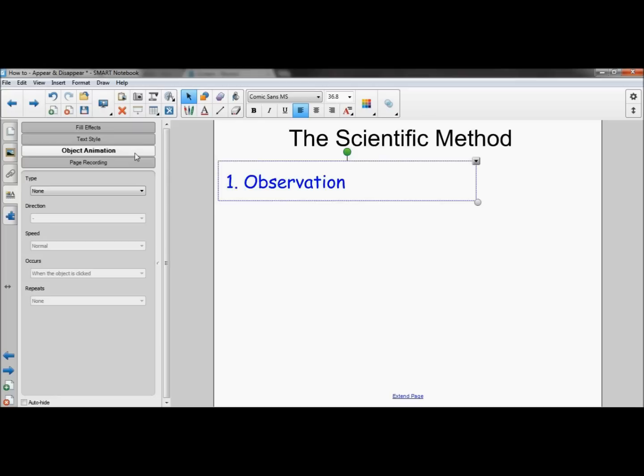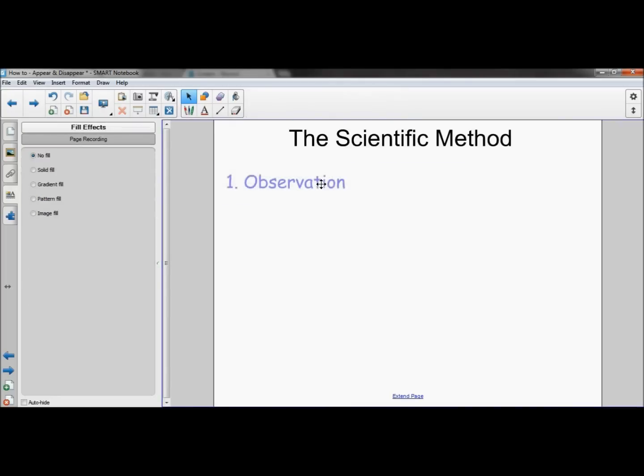Go down to object animation, change the type from none to fade in if you want it to appear. Now you can see that it's already appearing.